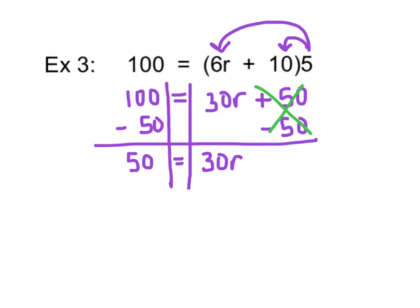Our next inverse operation is going to be to divide both sides by 30, because we want to get the R isolated by itself. So, that says multiply, so we'll do the opposite and divide by 30. Same on the other side. Our inverse operations will cancel each other out.